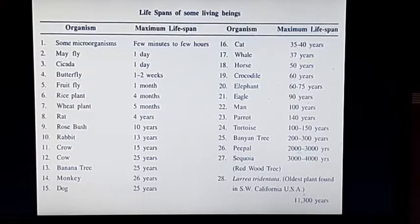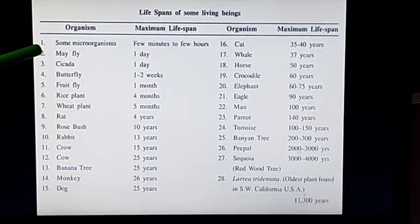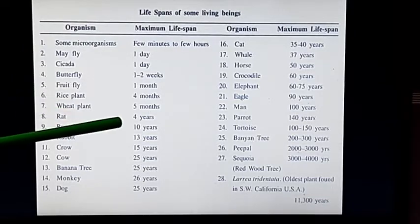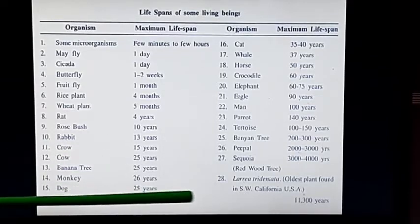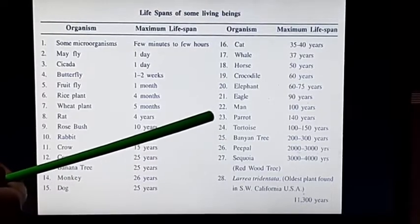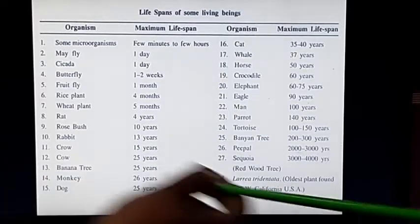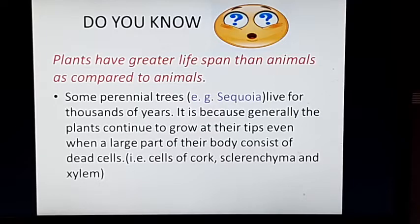This table is showing you the lifespan of different living organisms. Microorganisms have a lifespan of few minutes or few hours. There are few plants which have a lifespan of few months. Many plants as well as animals have a lifespan in years, and certain animals as well as plants have a lifespan in hundreds of years. The longest lifespan recorded till now is of a perennial tree, sequoia, which can survive for thousands of years.